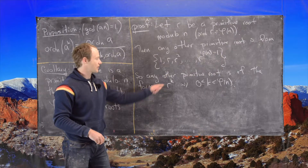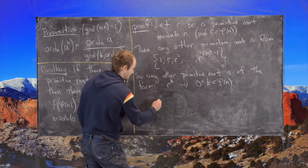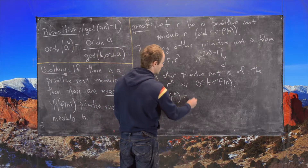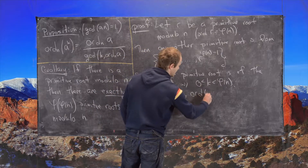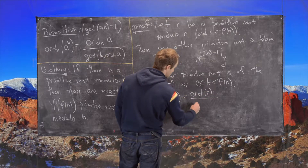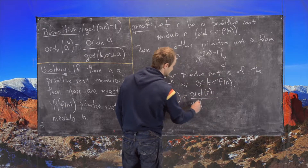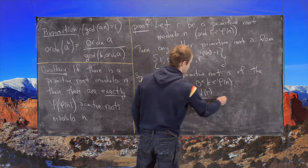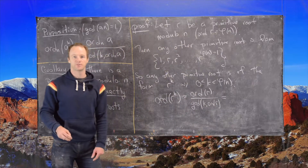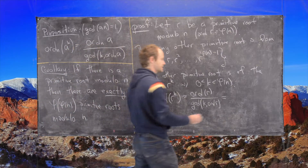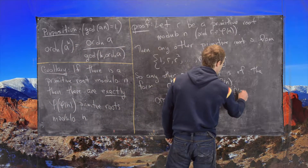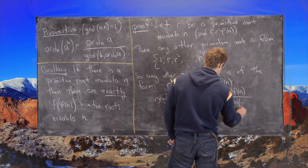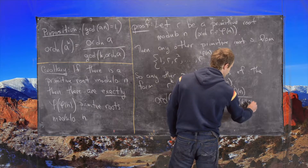Now let's calculate the order of r^k. The order modulo n of r^k equals the order of r divided by the GCD of k with the order of r. Because r is a primitive root, this equals φ(n) divided by the GCD of k with φ(n).